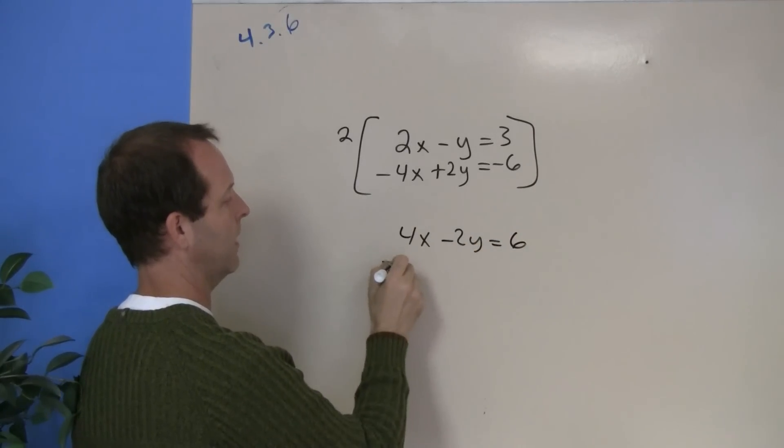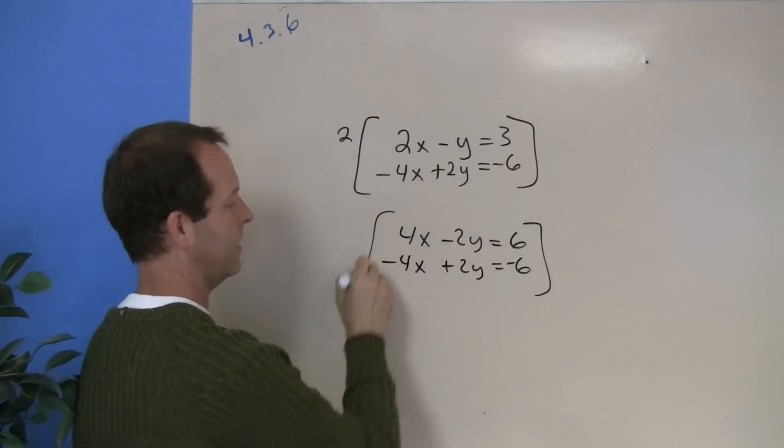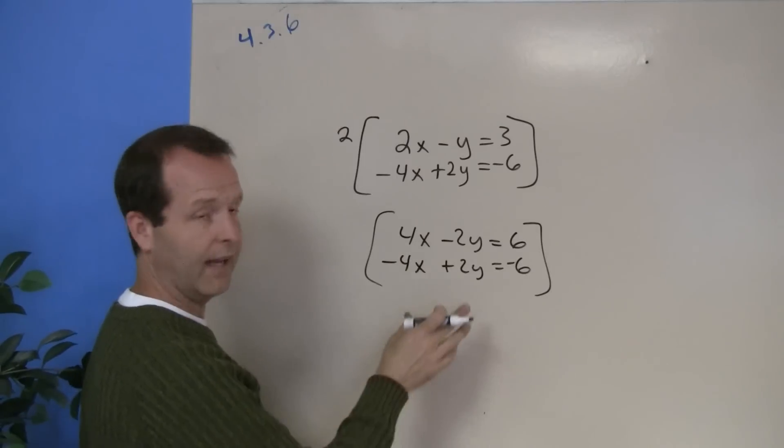So the bottom one I'm going to leave the same, 4x plus 2y equals negative 6, protect my system, I'm going to add them up.